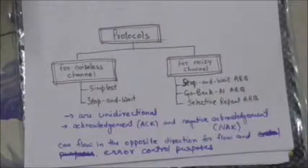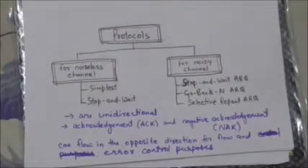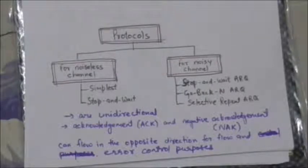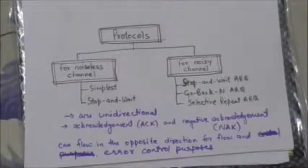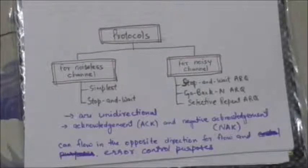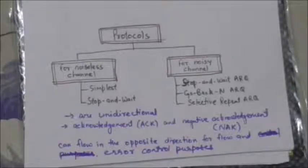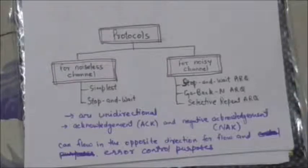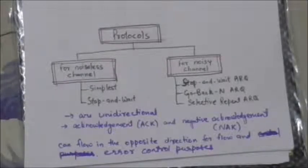Now we will see how the data link layer can combine framing, flow control, and error control to achieve the delivery of data from one node to another. For that purpose there are protocols, and these protocols are normally implemented in software using one of the common programming languages. These protocols can be divided into two categories: one which can be used for noiseless channels, that is error-free channels, and the other which can be used for noisy channels.